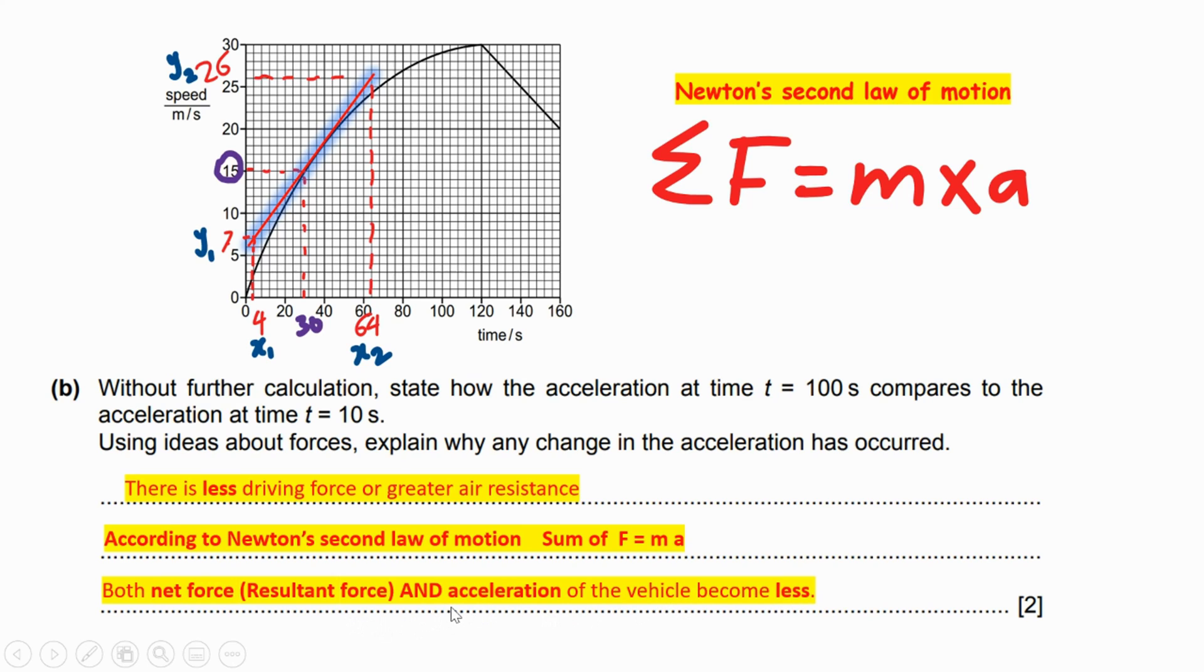It's mandatory to show the examiner again and again there is a link between the net force and the acceleration. One mark for showing the hidden reason for decreasing the acceleration or having less acceleration, and the net force or the resultant force with the acceleration as well. These are two marks for section (b).